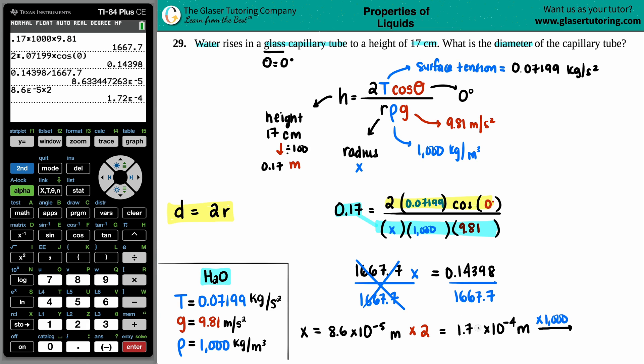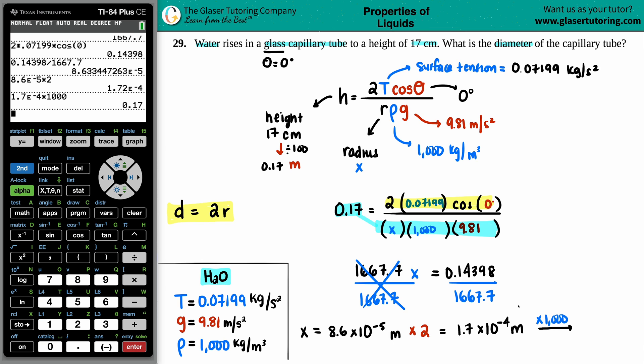For me, doesn't really matter sig figs, but you know, maybe your teacher or professor cares. So I'm just going to take the one point seven, second comma, negative four, times a thousand, and zero point one seven. And now that's in millimeters. That looks like a much better number to work with, and that is your diameter.